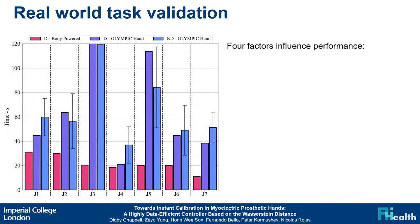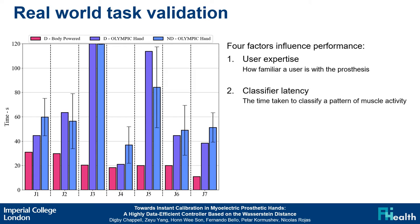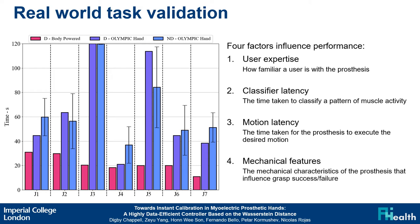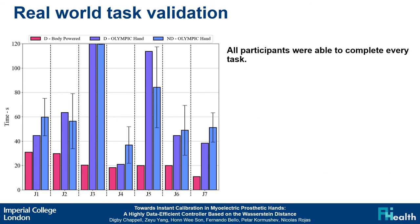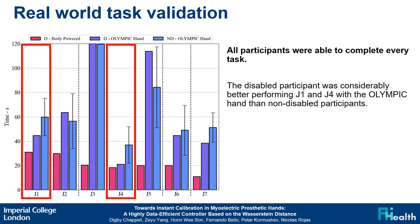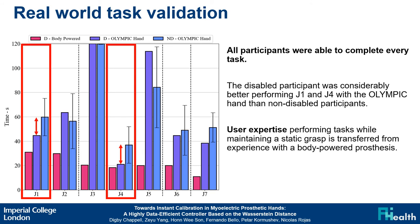Looking at the results of the Jebson-Taylor hand function test, we find that four factors influence participant performance: user expertise (how familiar the user is with the prosthesis), classifier latency (the time taken for the controller to classify a pattern of muscle activity), motion latency (the time taken for the prosthesis to execute the desired motion), and mechanical features (the mechanical characteristics of the prosthesis that influence grasp success or failure). If we look at J1 and J4, writing and simulated feeding, the disabled participant is considerably better than non-disabled participants when using the Olympic hand, because the static grasp used in these tasks is a skill easily transferred from a body-powered prosthesis, and therefore the difference can be resolved as user expertise.